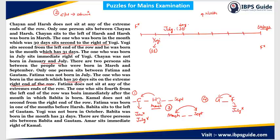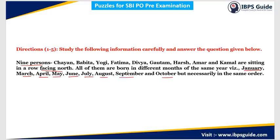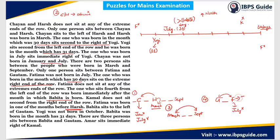Kamal does not sit second from the right end, so Kamal cannot be at position 8. Fatima was born in one of the months before Harsh. Since Harsh is born in March, and the available months are January, March, April, May, June, July, August, September, and October, the only month before March in this list is January. Therefore, Fatima is directly born in January.